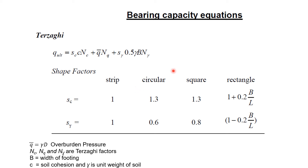Here is how to perform the soil bearing capacity calculations. Scientist Terzaghi presented the formula for the calculation of ultimate bearing capacity of the soil: ultimate bearing capacity equals sc·c·Nc plus q·Nq plus s_gamma·0.5·gamma·b·N_gamma.